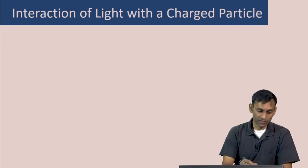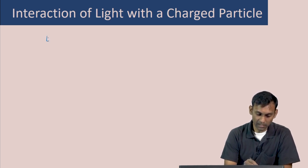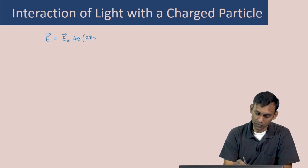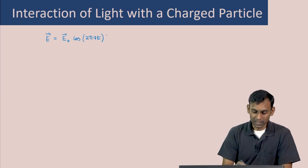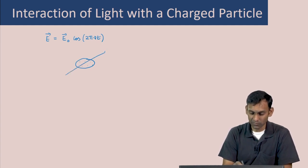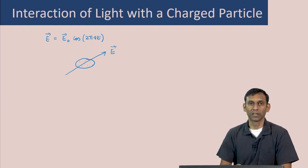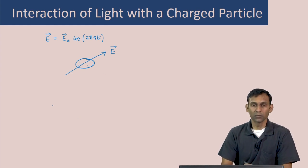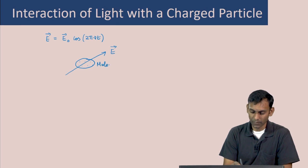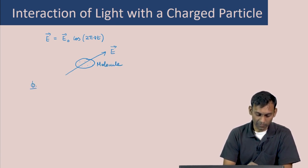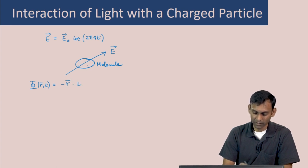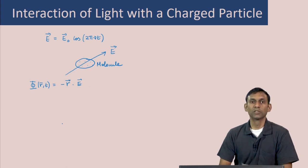The functional form of the electric field of frequency ν is E⃗ = E⃗₀ cos(2πνt). The scalar potential corresponding to the interaction of the field with the molecule can be written as Φ(r,t) = −r⃗ · E⃗. This is the potential of the field at the point having position vector r. Note that this form of the potential gives back the electric field as the negative gradient of the potential.